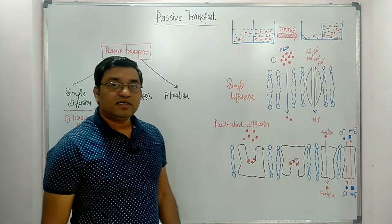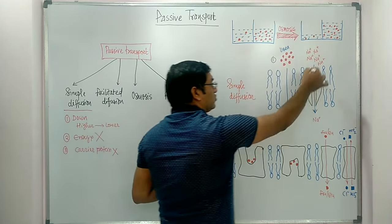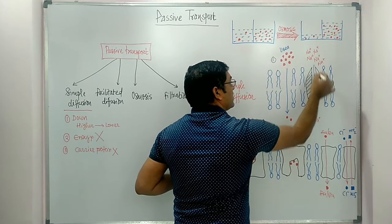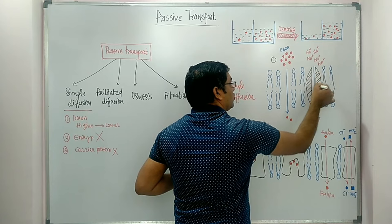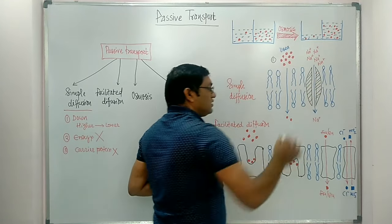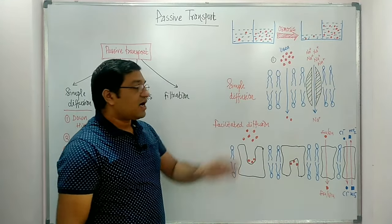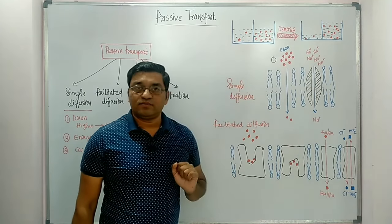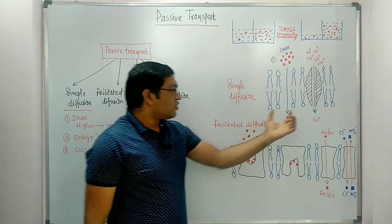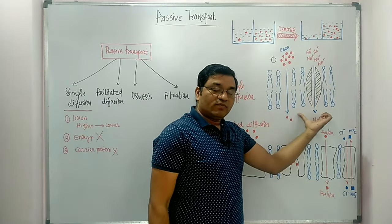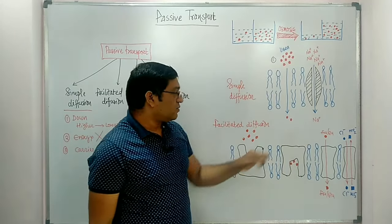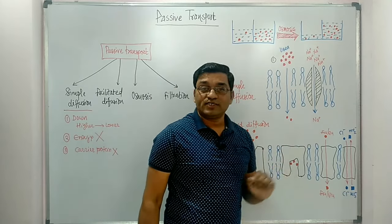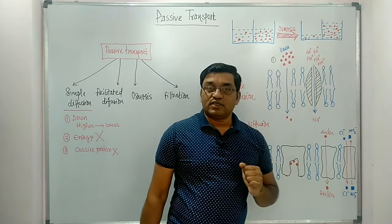The second mechanism is transport through Ion Channels. Because of their charge, ions cannot transport through the Lipid Bilayer, so Ion Channels are present. Examples of Ion Channels include Sodium Channels, Potassium Channels, Calcium Channels, and Chloride Channels.